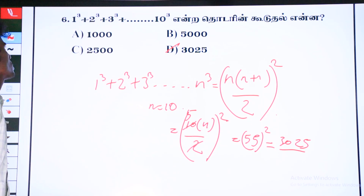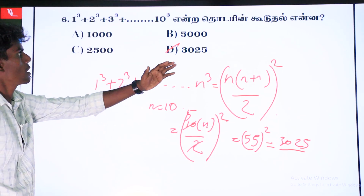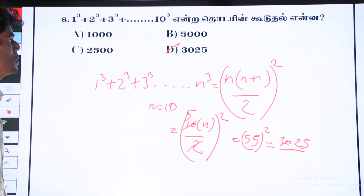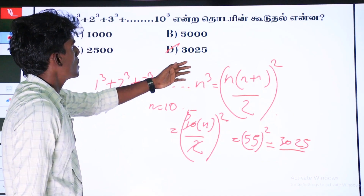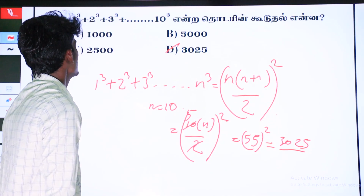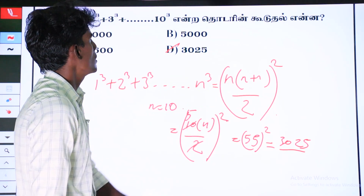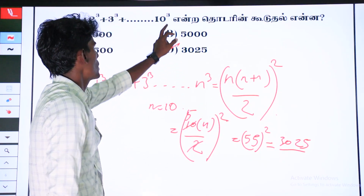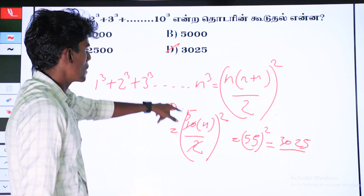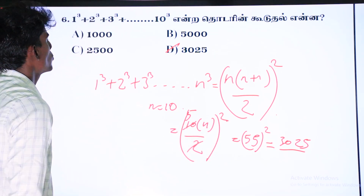Now, if we look at the formula: 1, 2, 3 to n is equal to n plus 1 by 2. That is, 1 square, 2 square, 3 square: n square is equal to n into n plus 1 into 2n plus 1 by 6. That is, 1 cube, 2 cube, 3 cube: n cube is equal to n plus 1 by 2 whole square. So 5 square is equal to 25.